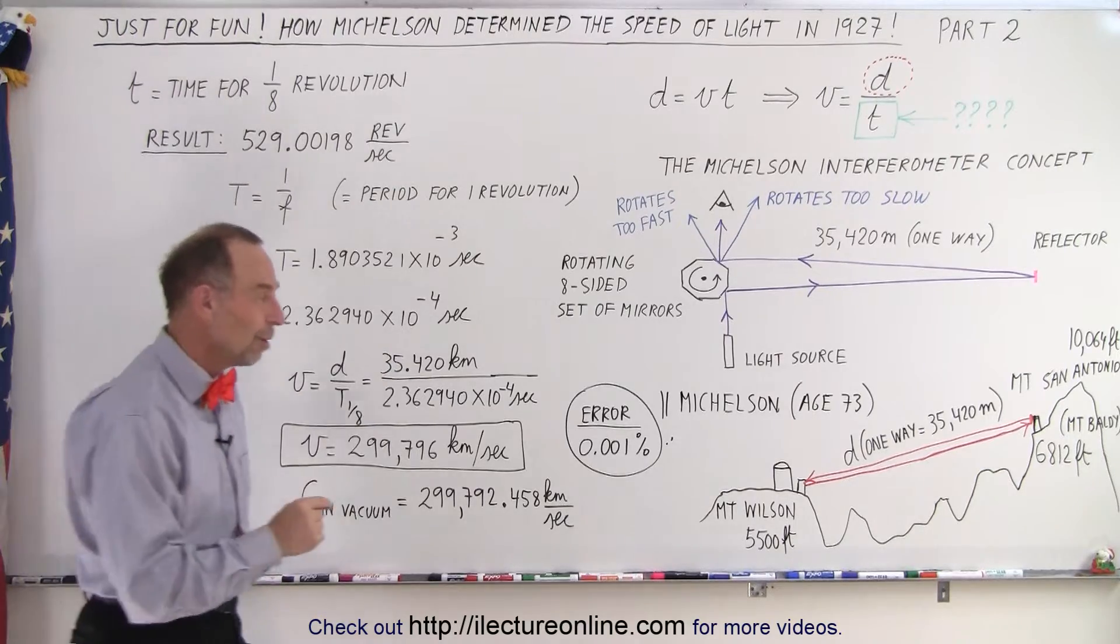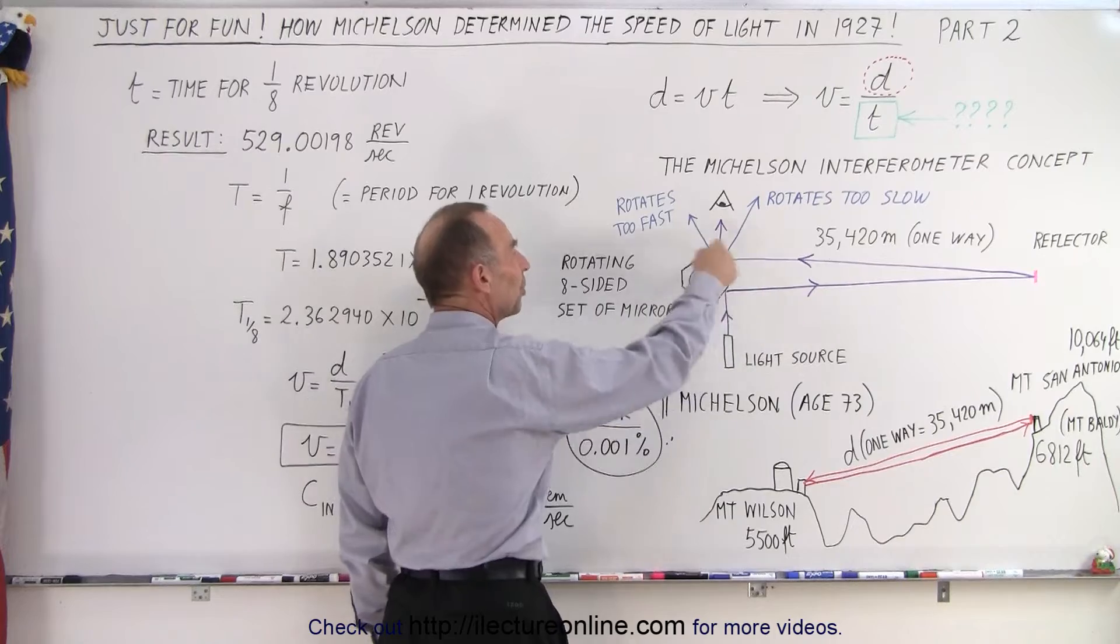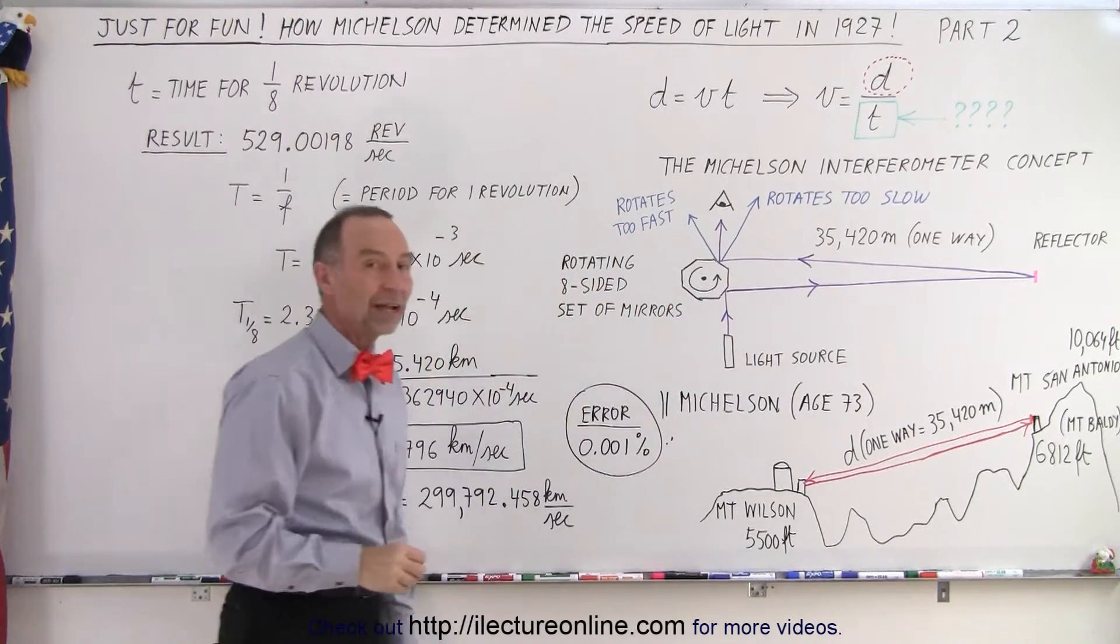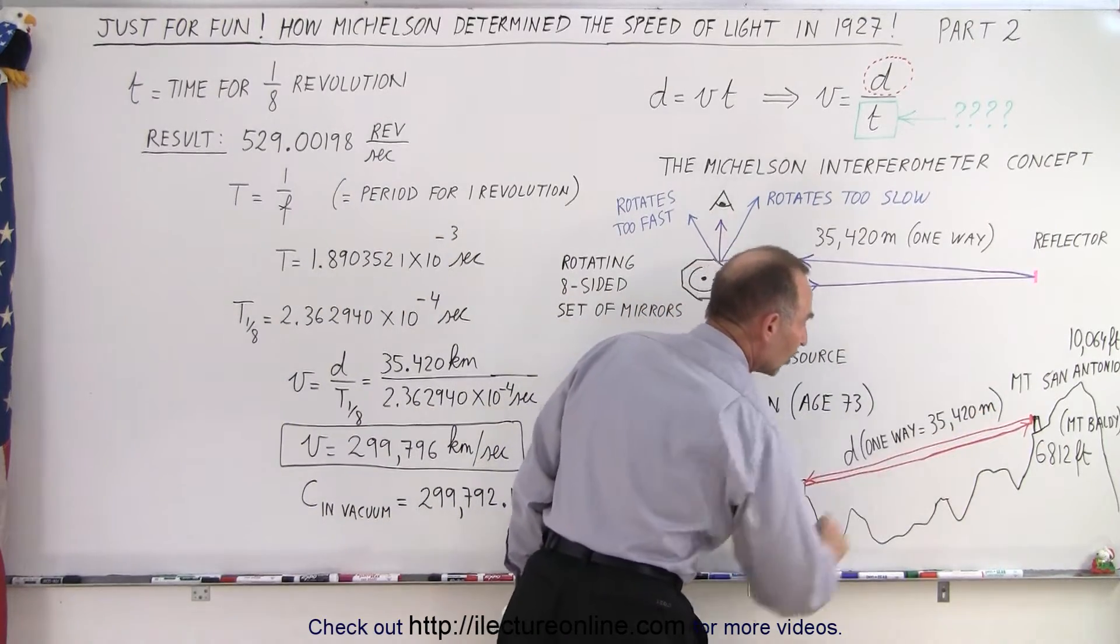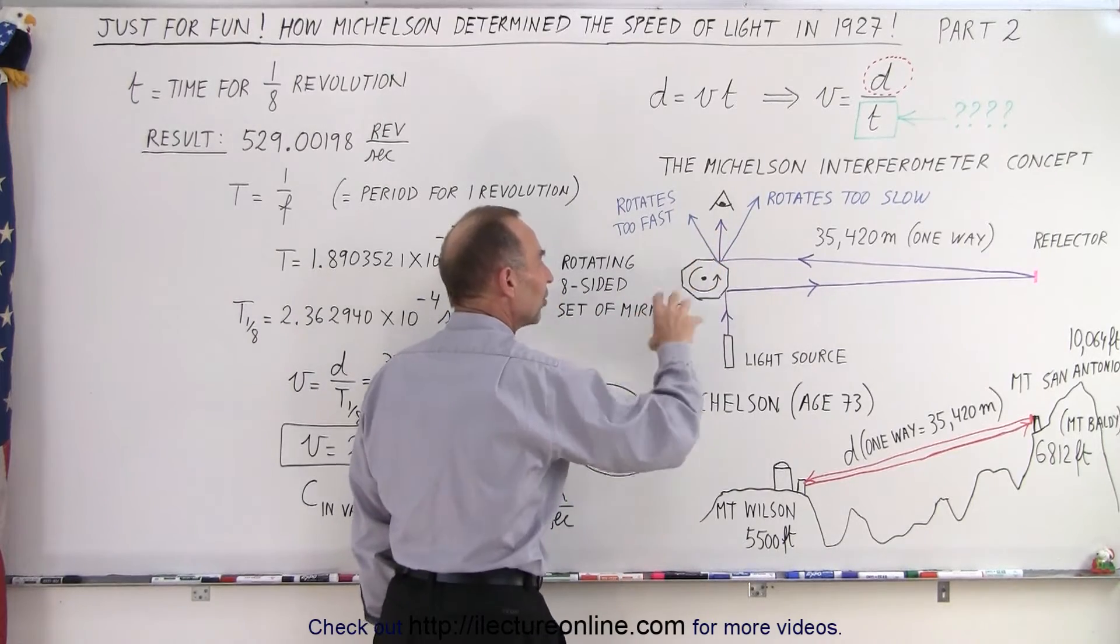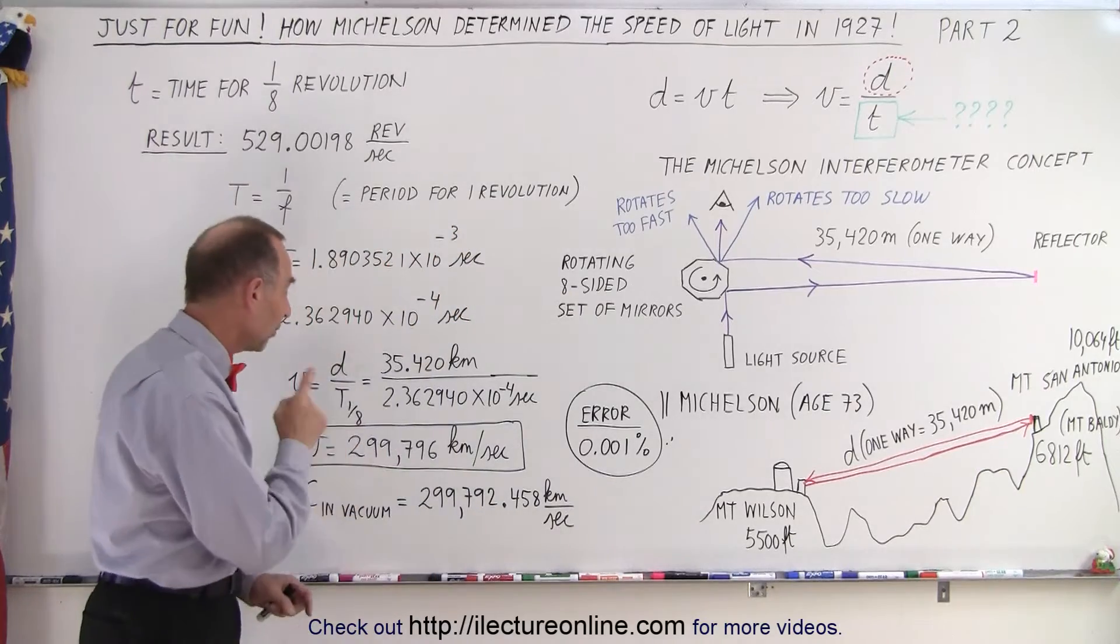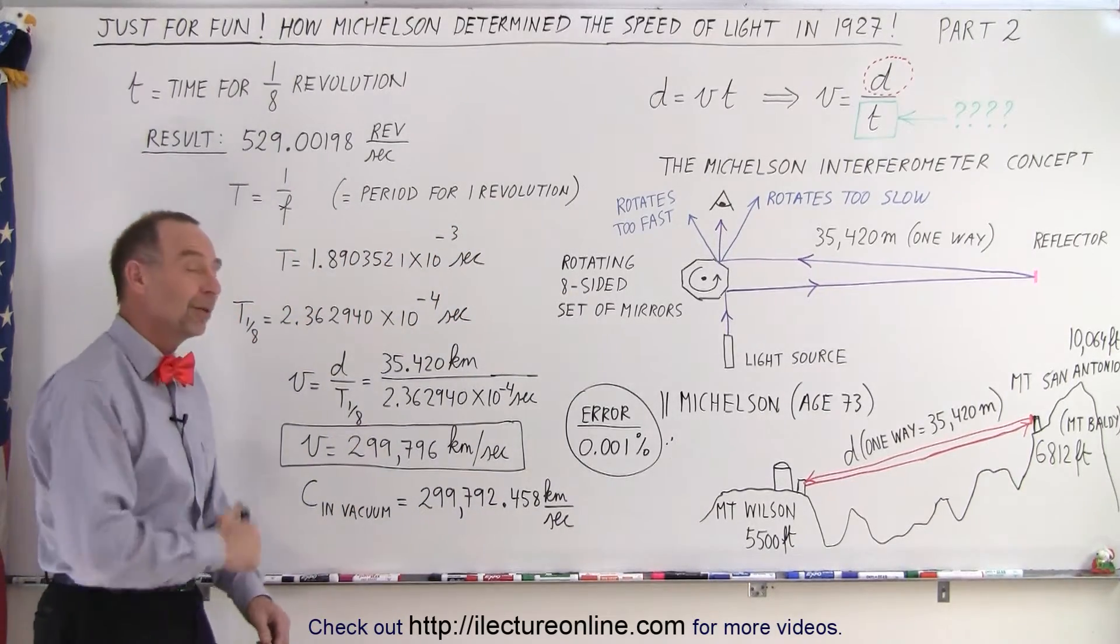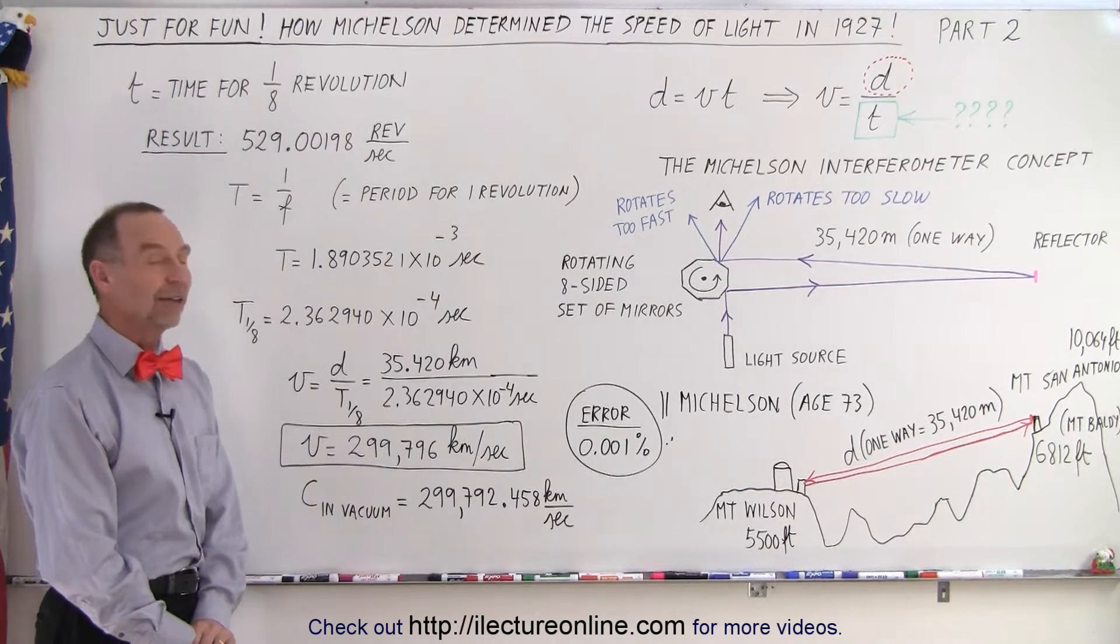They determined the speed of light back in 1927 due to the work that Mickelson did at age 73. They came up with a number where they were only off by 0.001%. Imagine the work that went into measuring this distance accurately and imagine the genius to come up with this concept to measure that time very, very accurately. So through a Herculean effort using the United States Coast and Geodesic Survey and the brilliance of Mickelson to come up with this method, married together, they came up with something that was absolutely phenomenal, a very, very accurate measurement of the speed of light. You must hand it to them. They really did a fantastic job.